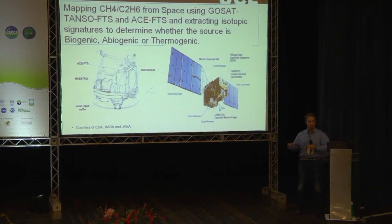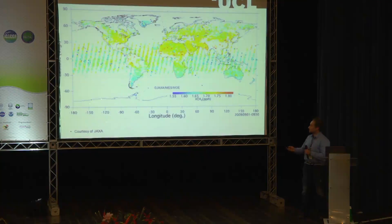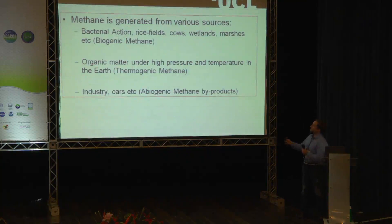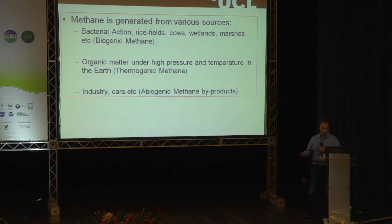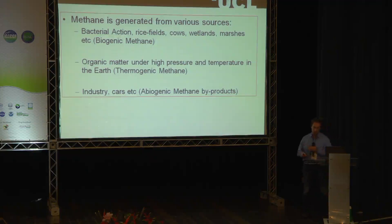What we're aiming to do is generate a global map of where these biogenic sources are. A quick recap: biogenic methane comes from bacterial actions, rice fields, cows, that sort of thing, while abiogenic methane is usually sourced from industry and cars, while thermogenic methane tends to be formed under high pressure and temperature in matter under the earth and then gets released from mud volcanoes and that sort of thing.